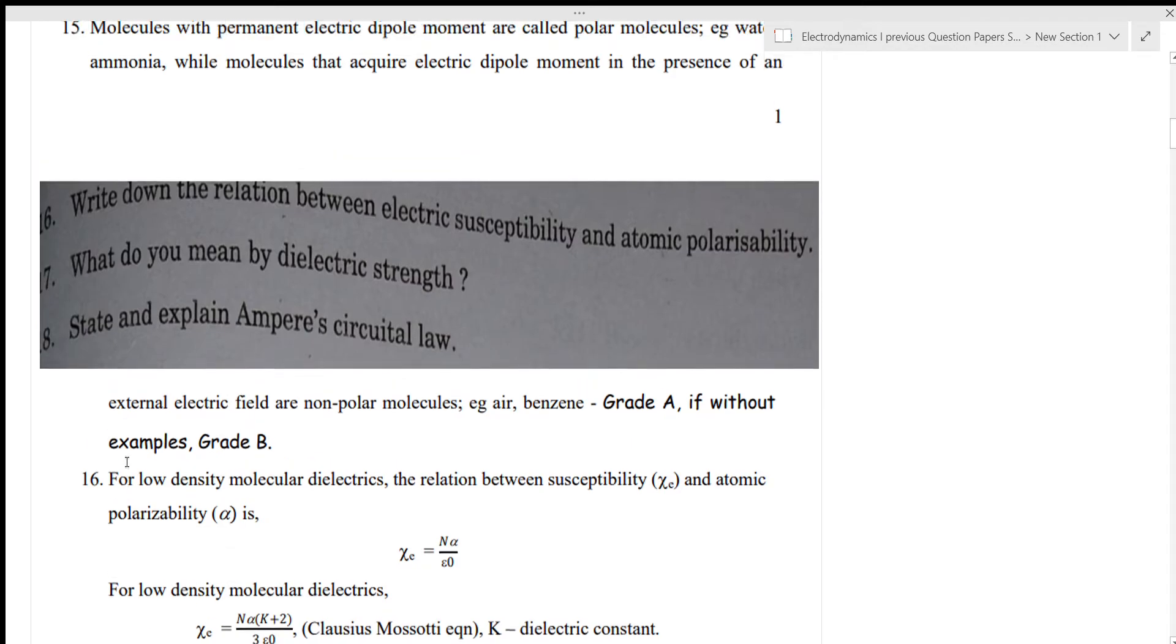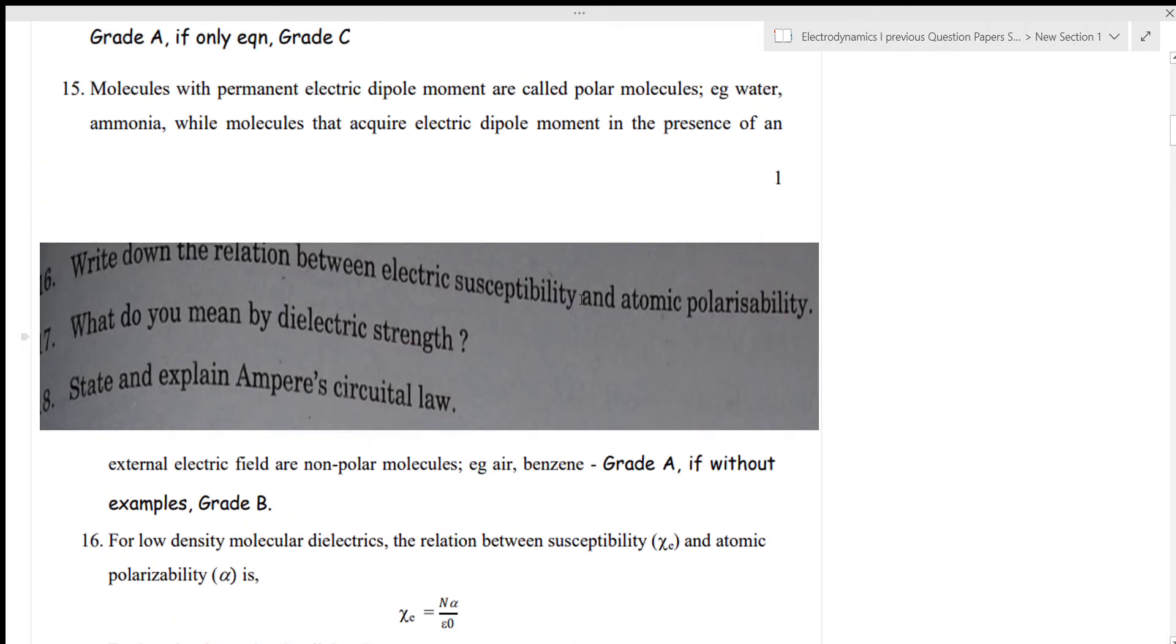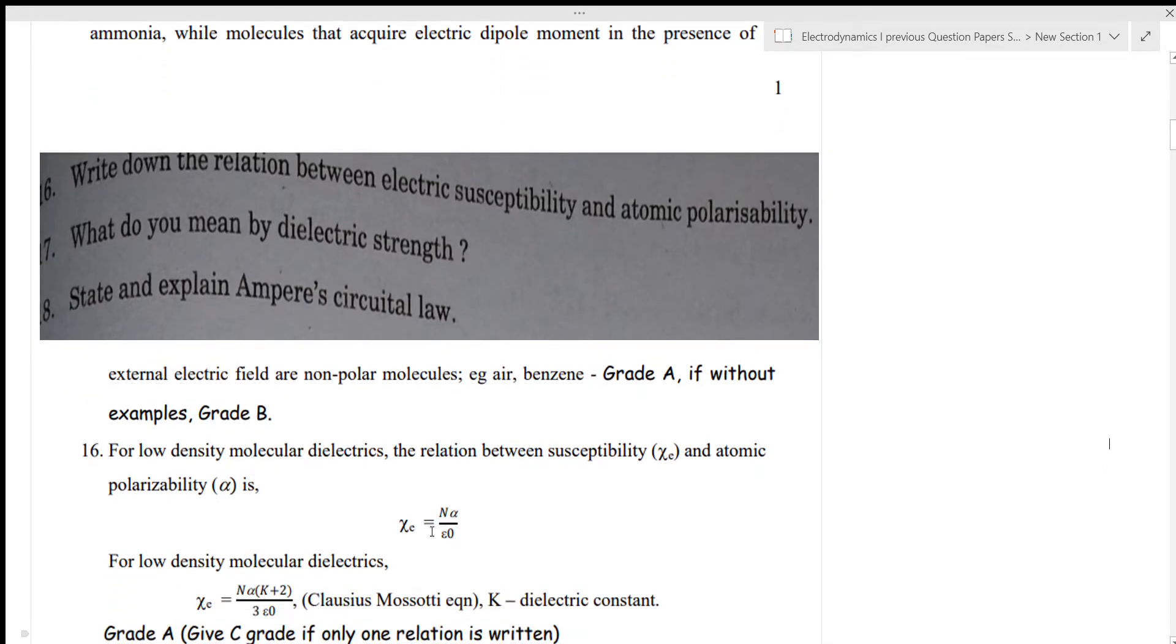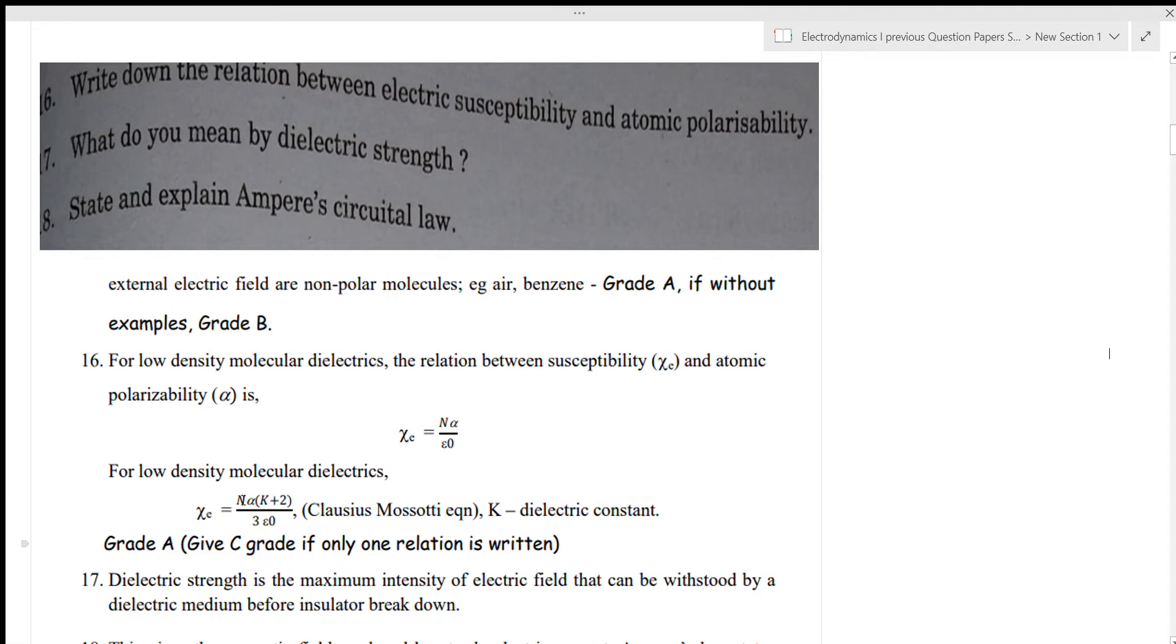For the 16th question, write down the relation between electric susceptibility and atomic polarizability. For electric susceptibility chi e is equal to n alpha by epsilon zero. Chi e is equal to n alpha k plus 2 by 3 epsilon zero, that is Clausius-Mossotti equation.